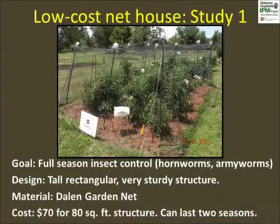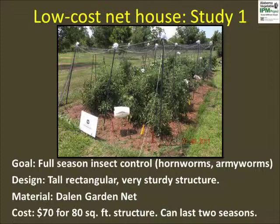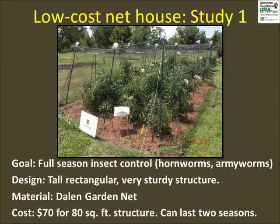This low-cost structure is the mini version of our large net house discussed in Video 1. It used all locally available materials and allowed one person to stand inside. It took about two hours to build an 80-square-foot structure after installing the drip irrigation system and planting tomatoes. We used Dalen Garden Net folded twice over to make the pore size ½ inch by ½ inch. It is important to properly anchor plastic or wooden poles to the ground using camping hooks. The nylon cords connecting the poles helped distribute wind pressure and also supported the fabric above the canopy. We planted determinate tomato varieties inside this net house and had good yields.